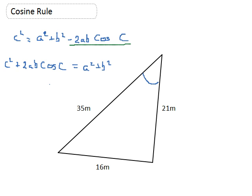Now I'm going to take the c² back over the equals, so I end up with 2ab cos C = a² + b² - c².